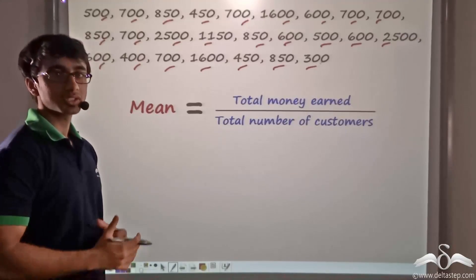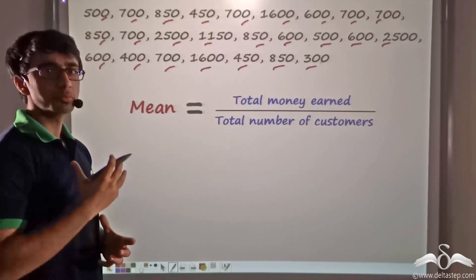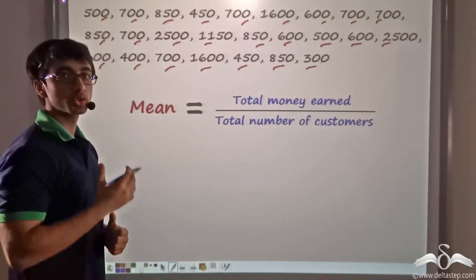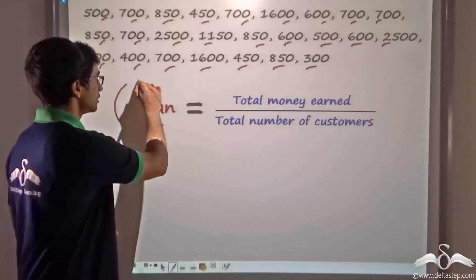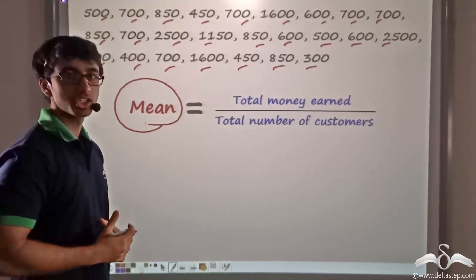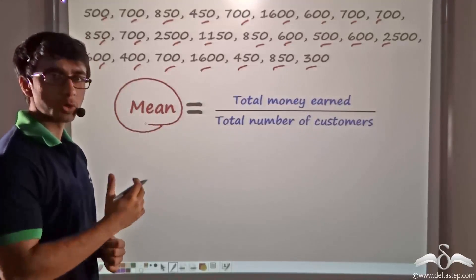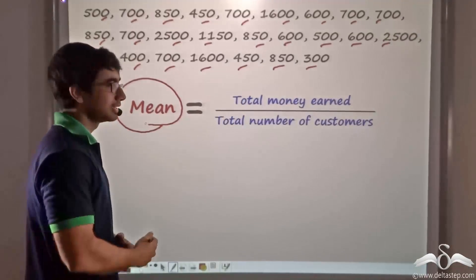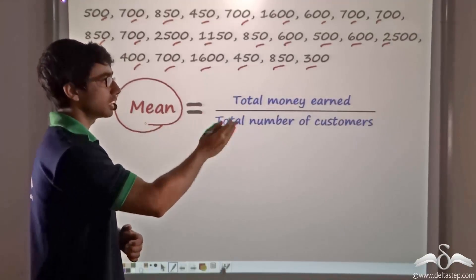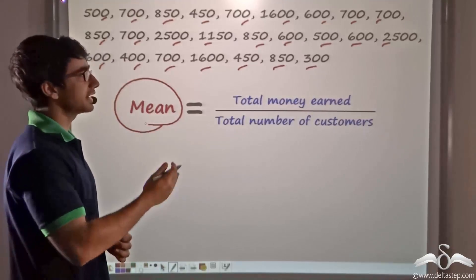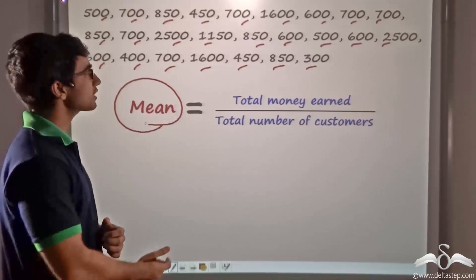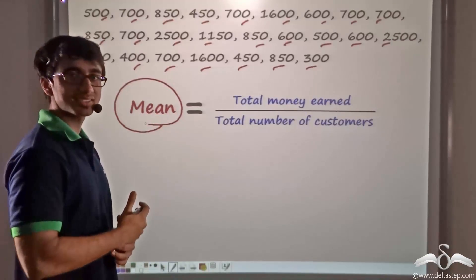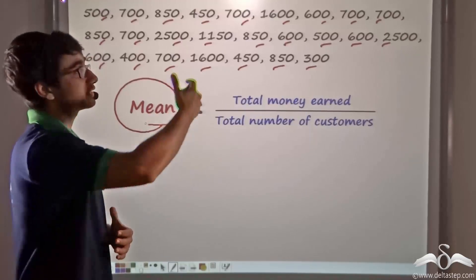Now as I told you, the shopkeeper wanted to make some meaning out of the money that he had collected. So he proceeded to find out the mean or the average of the money that he had collected. How will he find it out? He simply divides the total money that he has earned by the total number of customers. So how can we find out the total money earned? The shopkeeper simply adds up the individual prices of the dresses he has sold and the number of times he has sold them.